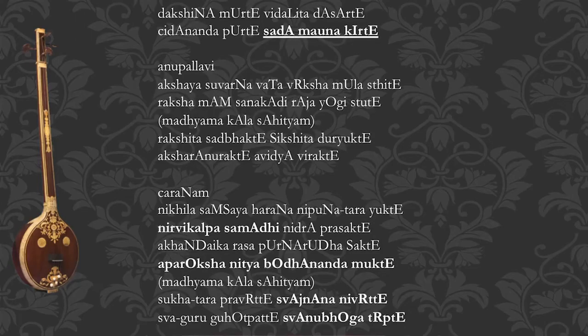That almost always happens. For instance, if you look at the composition 'Dakshinamurte' - here the Dvithi Akshara Prasha is on 'Ksha'. The Anupallavi first line is 'Akshaya Suvarna Vatavriksha Moolasthite.' You can see that the 'Ksha' Prasha is carried through the first line of the Pallavi and the first line of the Anupallavi - the Anupallavi has completely maintained the 'Ksha' Prasha.